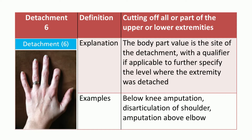Detachment is defined as cutting off all or part of the upper or lower extremities. This root operation applies only to the upper or lower extremities because all amputation procedures are coded to this root operation. For amputation procedures, the body part value is the site where the detachment is actually performed. The seventh character qualifier is used to further specify the level where the extremity was detached — examples include below-elbow amputation, above-elbow amputation, and disarticulation of the shoulder.